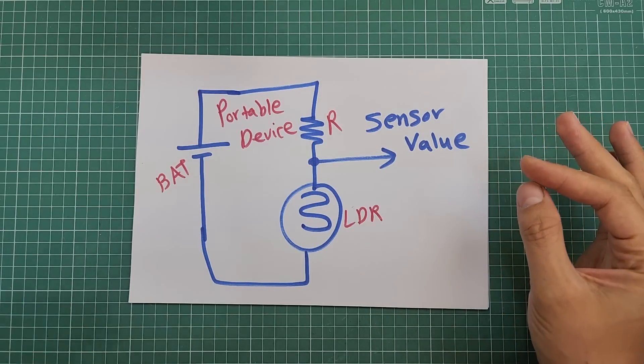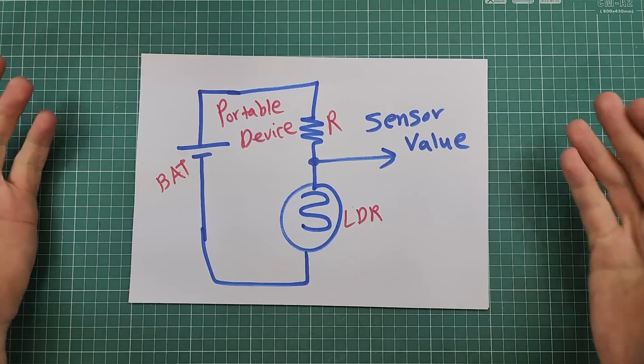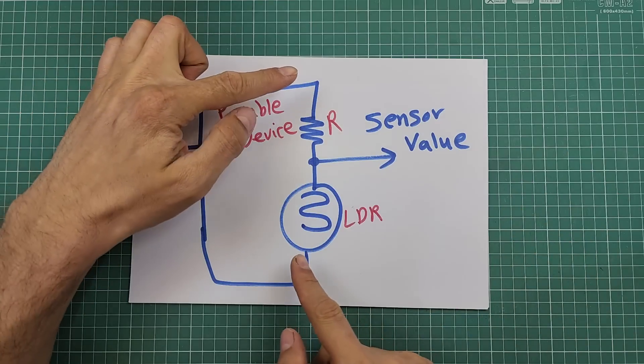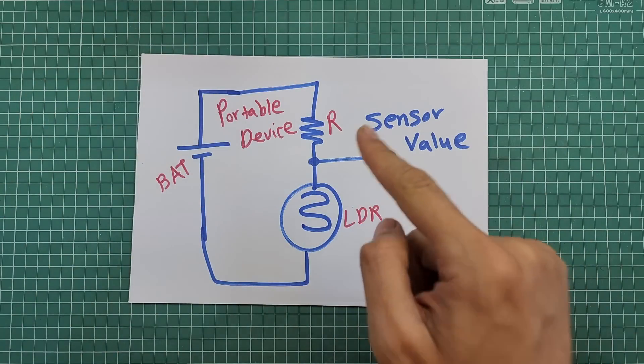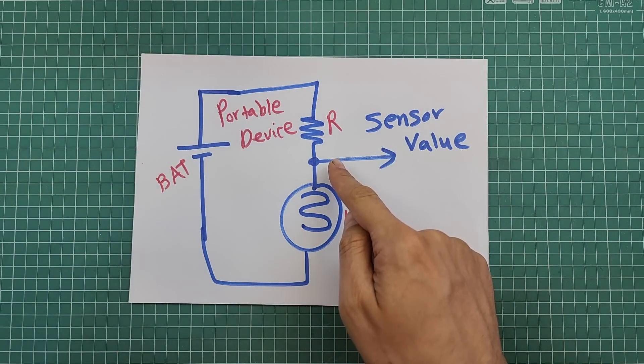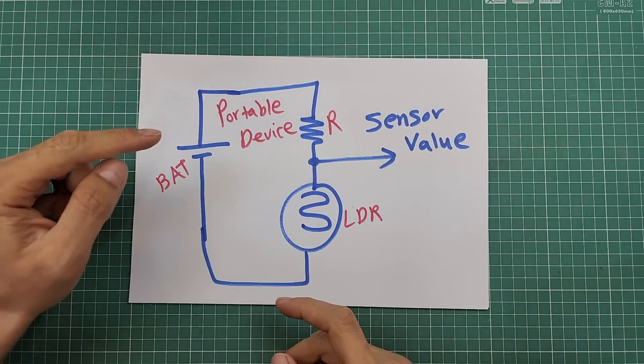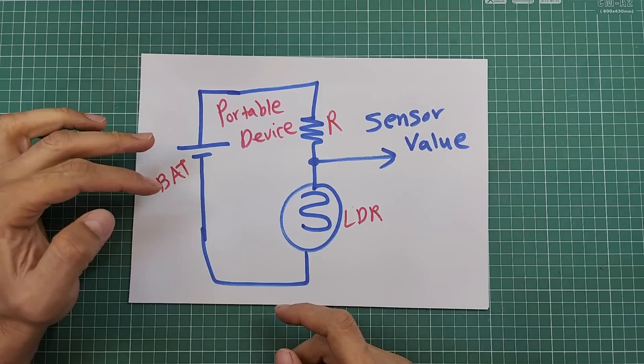Portable devices are powered by batteries, right? In a portable device, if you use the battery voltage directly to power the circuit, the sensor value here will be invalid because the voltage here will be affected by charging or discharging the battery. I mean the battery level. Think about it. It is not just the battery voltage. Any voltage fluctuation or noise will be directly transformed into the sensor value.